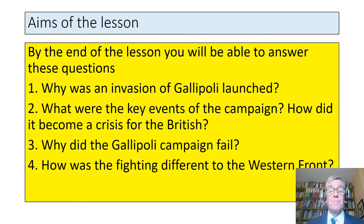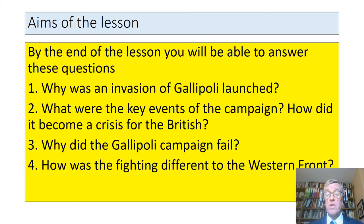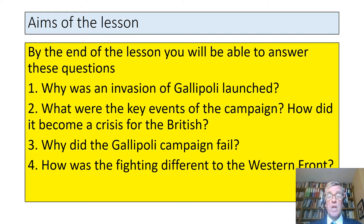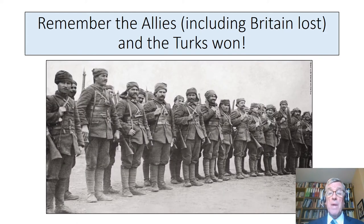So the aims of this lesson. By the end of it, I hope you'll be able to answer these questions: Why was an invasion of Gallipoli launched? What were the key events of the campaign? How did it become a crisis? Why did the Gallipoli campaign fail? How was the fighting different to that on the Western Front? The main effort was on the Western Front, a line of trenches in Belgium and France. And it's important to remember that Britain — and by that of course we mean the British Empire — lost and the Turks won.